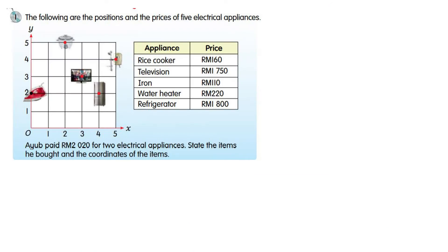Look at example one. The following are the positions and prices of five electrical appliances: rice cooker, television, iron, water heater and refrigerator. Ayub paid 2020 ringgit for two electrical appliances. State the items he bought and the coordinates of each item.